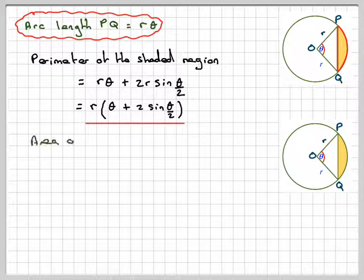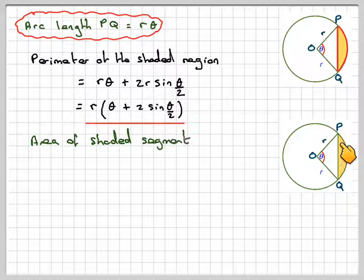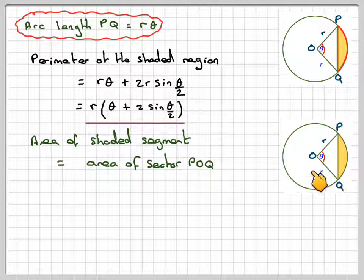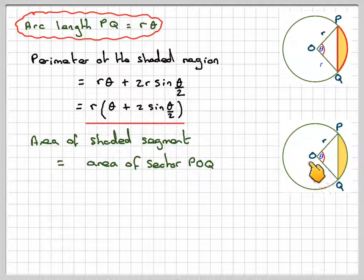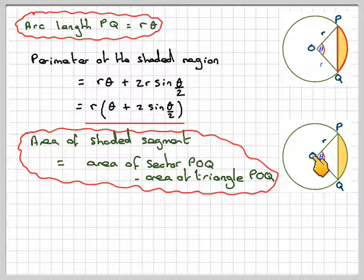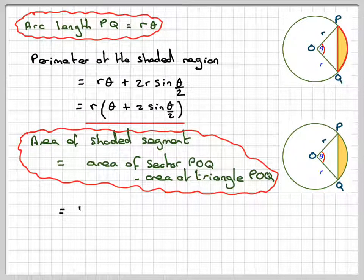For the second part, to find the shaded region of this segment, this is called a segment. We need to find the area of the sector OPQ and then take away the area of the triangle OPQ, this triangle here, and then that will give us the shaded region.